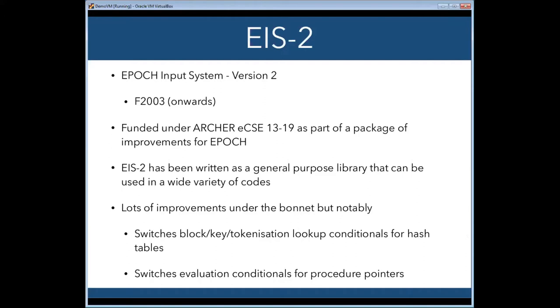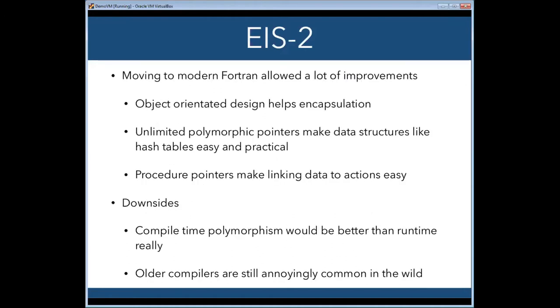Under the bonnet, there's a lot of changes and improvements. If you've ever seen EPOCH code base, you'd see a lot of them immediately, but the main things are that the lookup of the blocks and the keys and the mathematical expression token generation has been switched from conditionals to hash tables, so theoretically order one, and the evaluation has switched to procedure pointers, which is obviously order one. So we've been able to make a lot of improvements by going to modern Fortran. The new thing is object-oriented, so we have all the advantages of encapsulation. The data structure stuff, like the hash tables, are done using unlimited polymorphic pointers. That does come with the performance hits, so they're not used in the absolutely performance-critical bits of EIS, but they make things very easy. And the procedure pointers, meaning that you can link arbitrary data to an action, are very helpful as well.